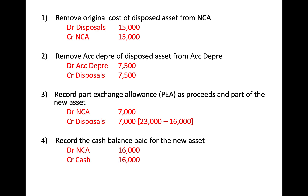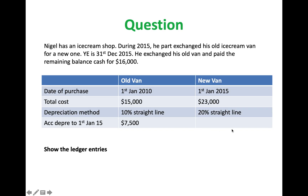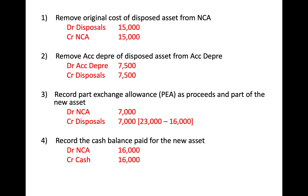The third step is to record the PEA — it is just like proceeds; however, this is in the form of assets. So instead of debiting the bank, you are debiting the non-current assets account. In this case, the figure is not given to you, but from the table you know the cost of the new van is $23,000 and the cash paid is $16,000. The remaining balance is therefore the value of the old van exchanged, also known as the PEA. Here you get $7,000, and you debit your non-current assets and credit your disposals.